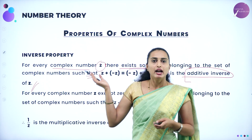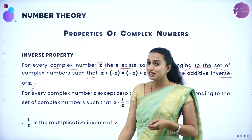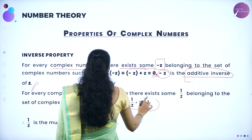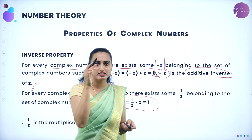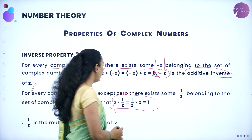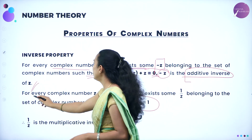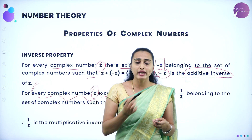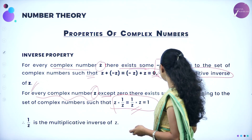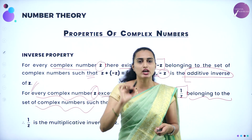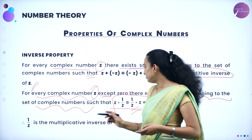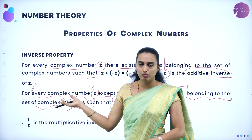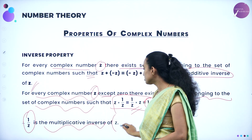Multiplicative inverse: for every complex number z except 0 — because 1 by 0 is undefined — there exists 1 by z belonging to the set of complex numbers such that z times 1 by z equals 1 by z times z equals 1. So 1 by z is called the multiplicative inverse of z. Adding means additive identity or additive inverse; multiplying means multiplicative identity or multiplicative inverse.